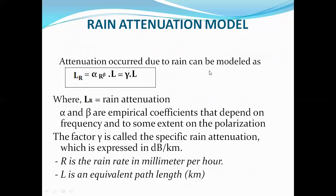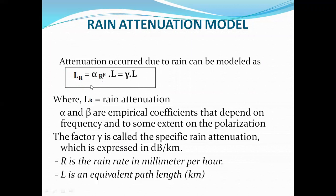The rain attenuation model is: LR = α · R^β · L, where α and β are empirical coefficients depending on frequency and polarization. R is the rain rate in millimeters per hour, L is the equivalent path length in kilometers, and γ is the specific rain attenuation factor in dB per kilometer. This model is capable of combating rain attenuation effects for higher frequency communications.